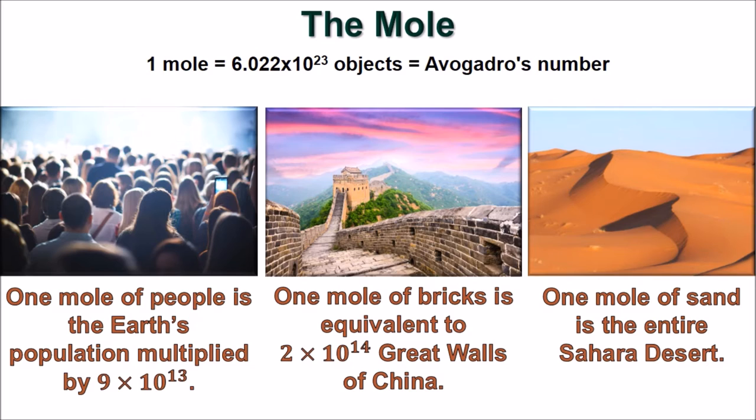The measurement used is the mole. The mole is a handy way to count atoms using their weight. A mole is equal to Avogadro's number, which is 6.022 times 10 to the power of 23. So, one mole of something is equal to 6.022 times 10 to the power of 23 units of that thing.